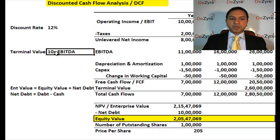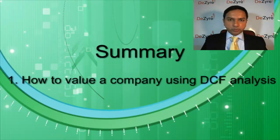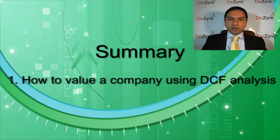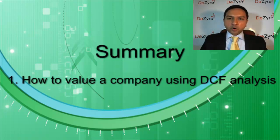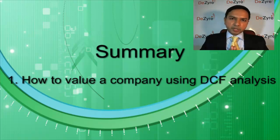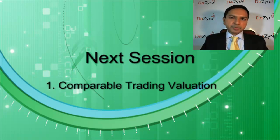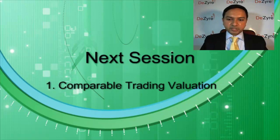So that's the DCF — how you calculate the valuation of a company using a discount rate, a terminal multiple, enterprise value, and net debt. In the next session we're going to focus on another way to calculate the value of a company called comparable trading analysis. I'll see you soon at that next session. Thank you, bye.